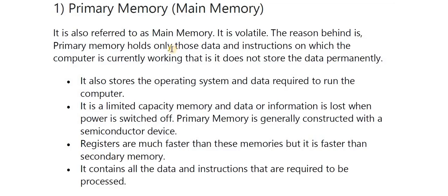Primary memory is the main memory; it is volatile and stores the operating system and data required to run the computer. It has limited capacity and data is lost when power is switched off. Primary memory is generally constructed with semiconductor devices. Registers are much faster than these memories. It contains all the data and instructions required to be processed.